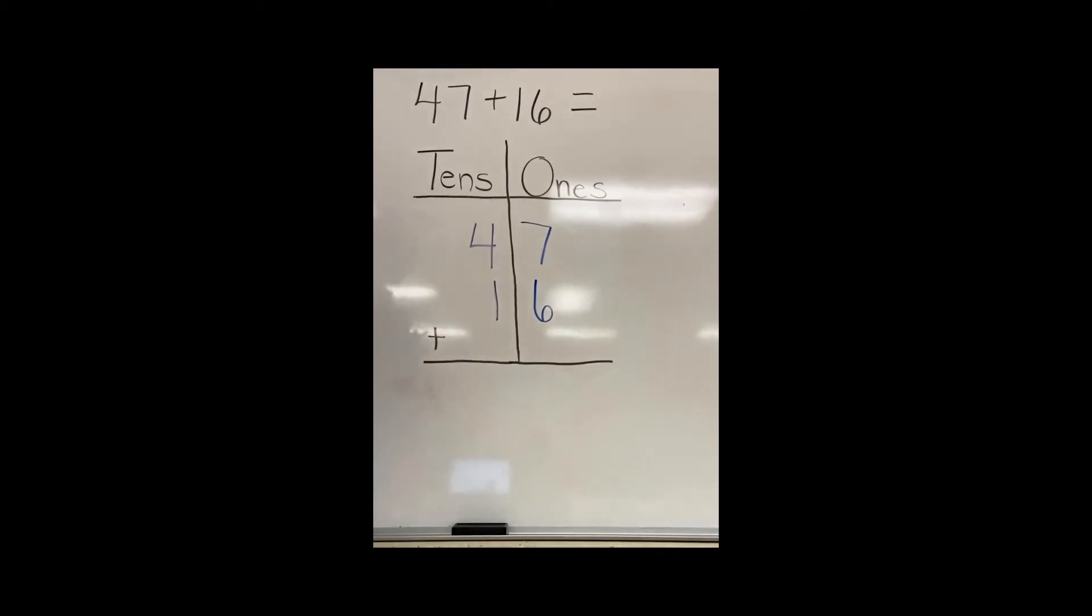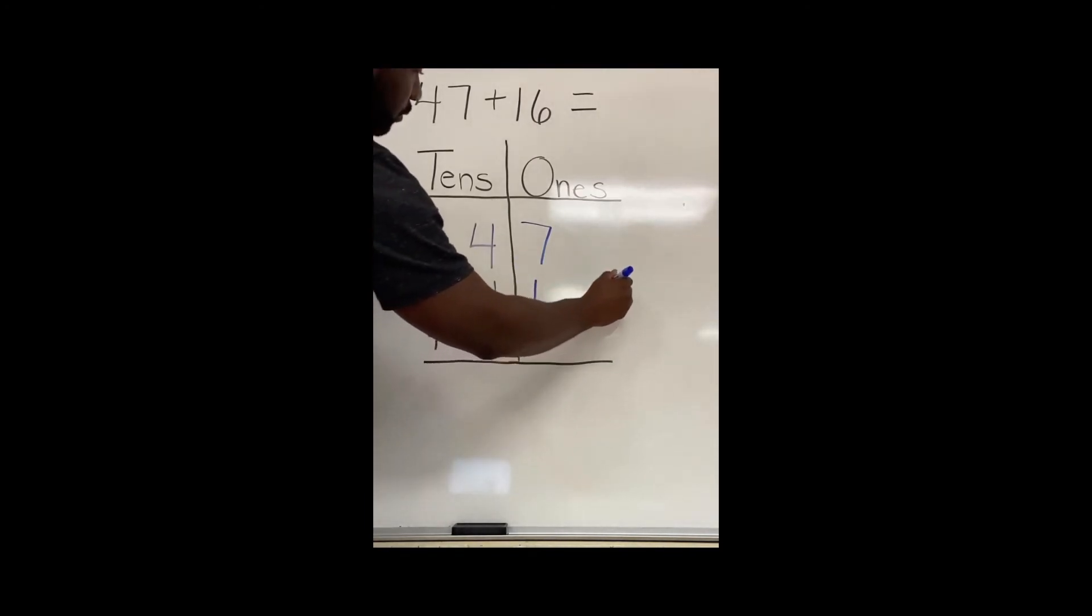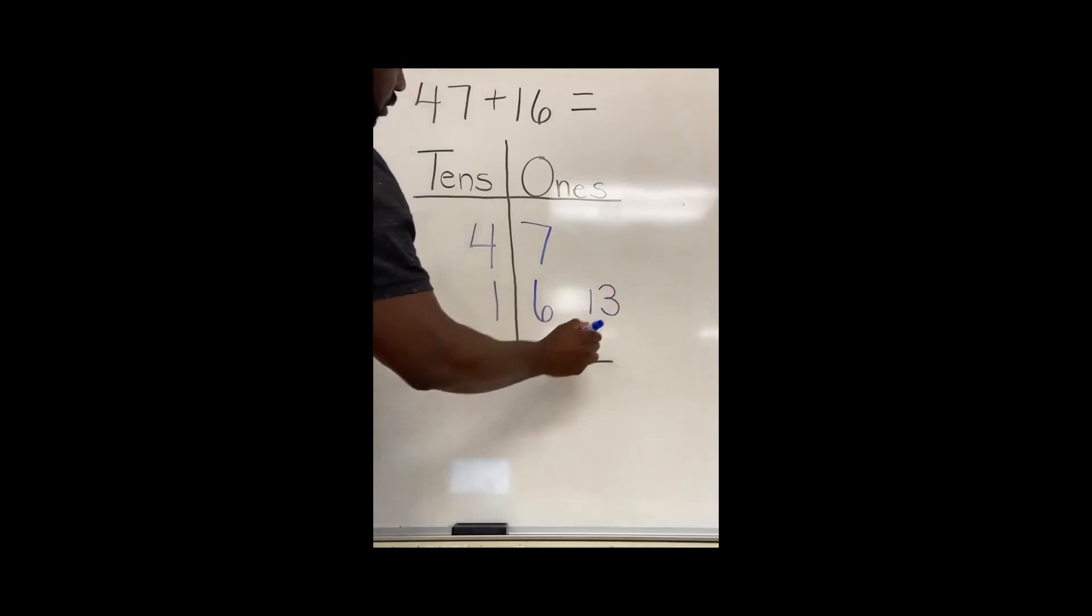The first thing I need to do, I need to add my ones place. Seven plus six, seven, eight, nine, ten, eleven, twelve, thirteen. I'll write the sum of those two to the right side.